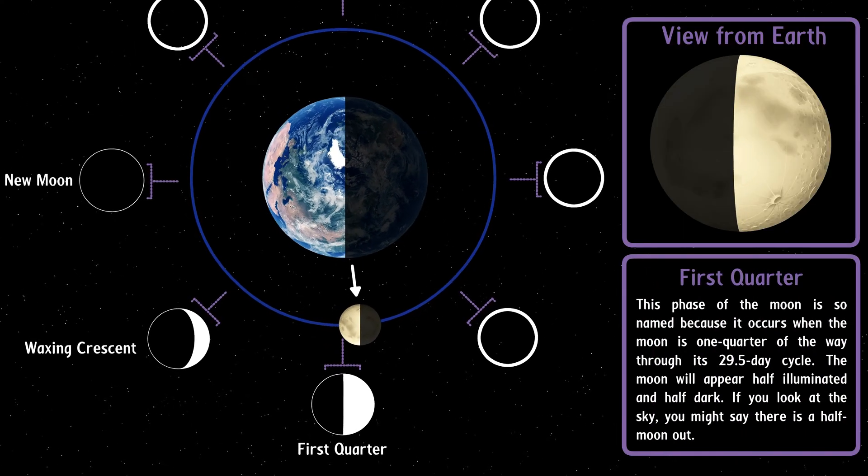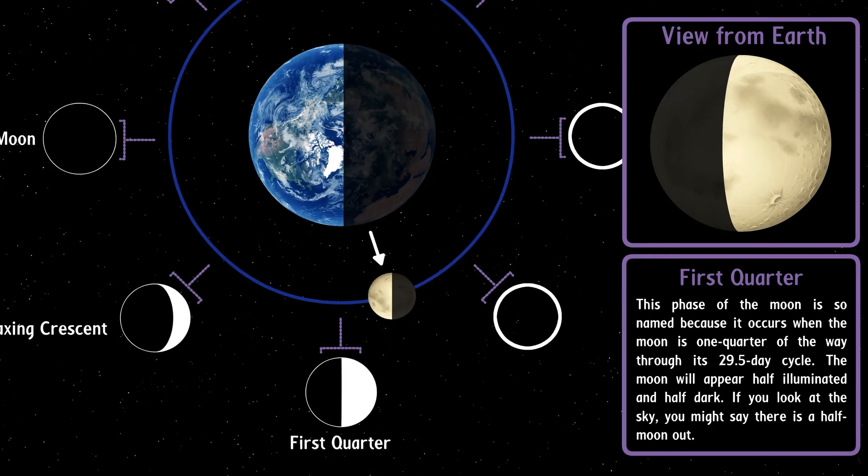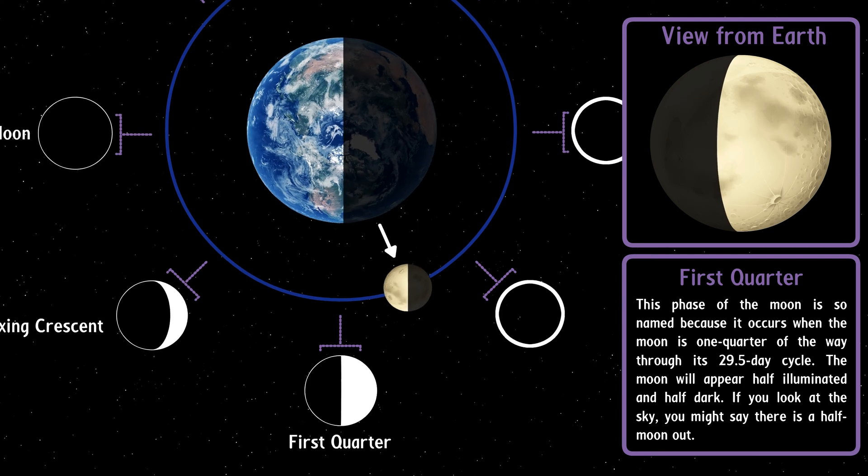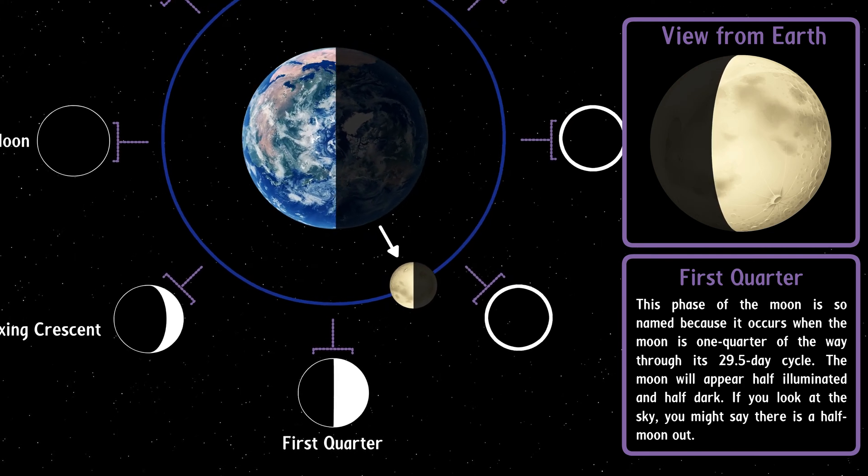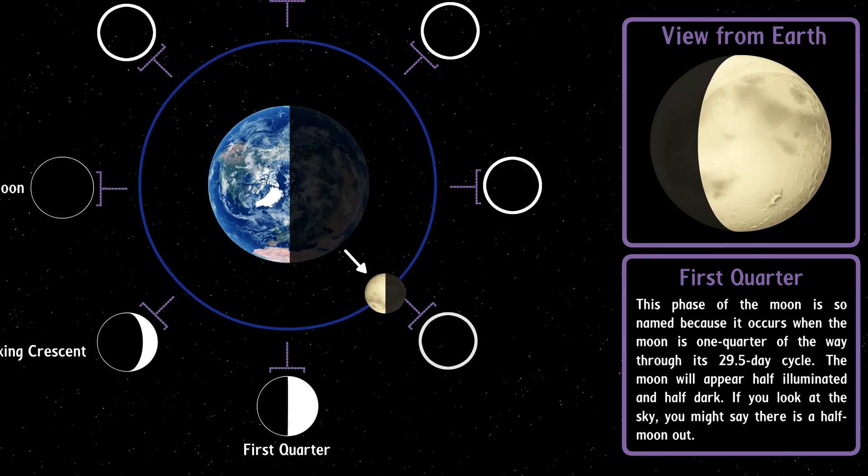First quarter. This phase of the moon is so named because it occurs when the moon is one quarter of the way through its 29.5-day cycle. The moon will appear half illuminated and half dark. If you look at the sky, you might say there is a half moon out.